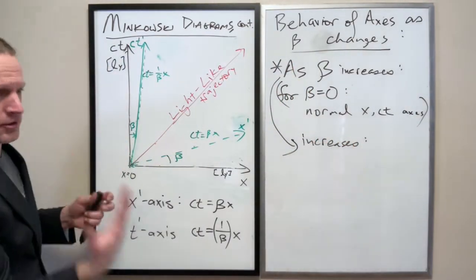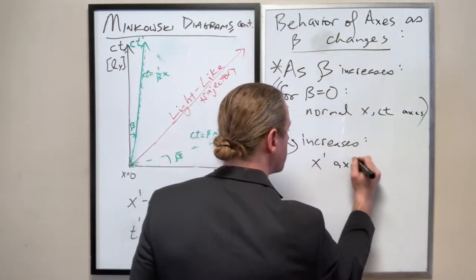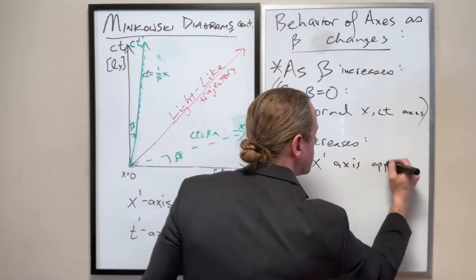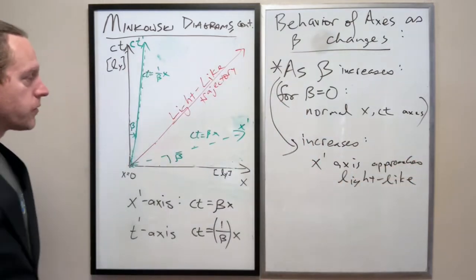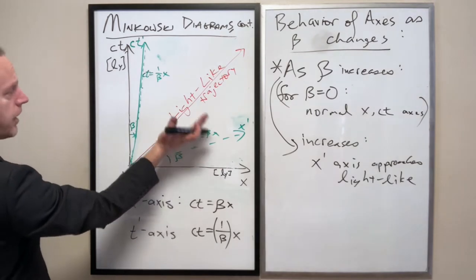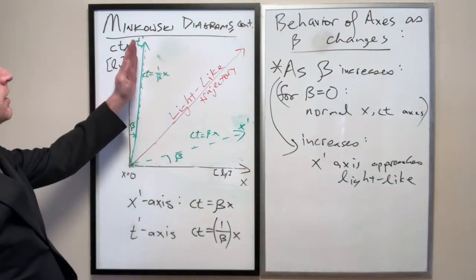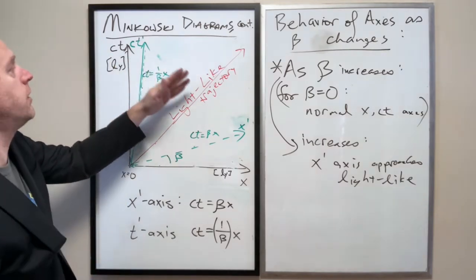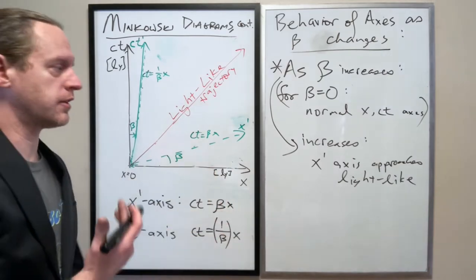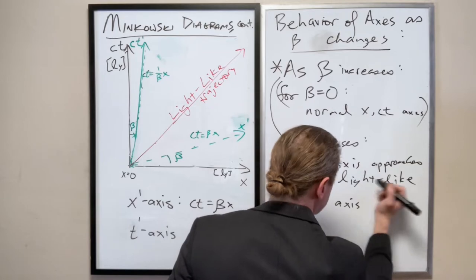Clearly, a faster velocity means a higher slope for the x-prime axis. So it gets a higher and higher slope, up to 1. And this line here, as beta increases from effectively 0 to 1, the slope becomes less and less, so the t-prime axis approaches the same.